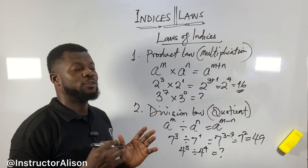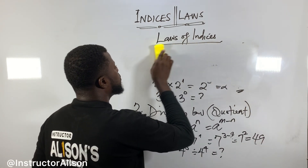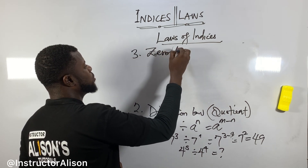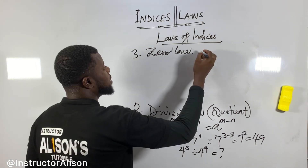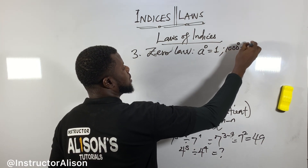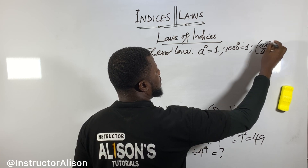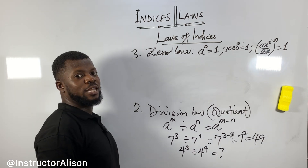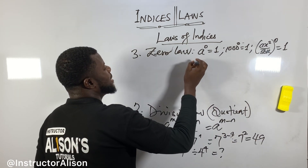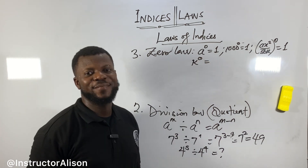The third law of indices: anything raised to the power of zero equals 1. It doesn't matter what the base is — even 1000 to the power of zero is 1. Even a complex expression like (a times x over 5d) to the power of zero is still 1. Try this: what is 'ak' to the power of zero? Put your answer in the comments.